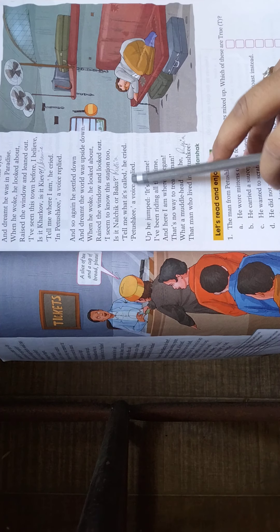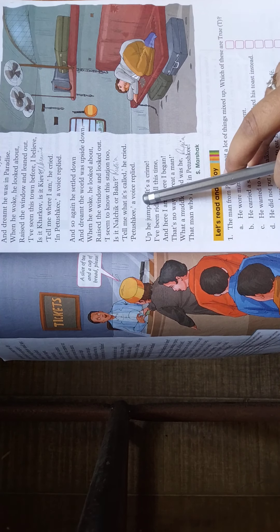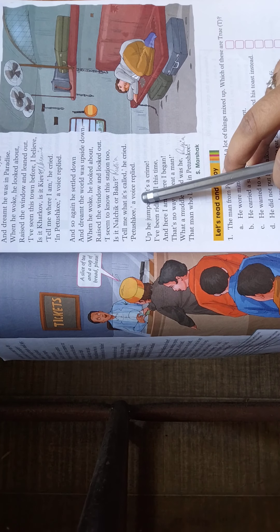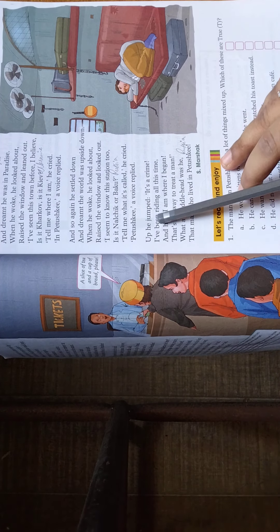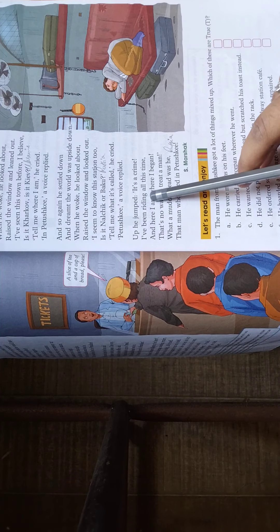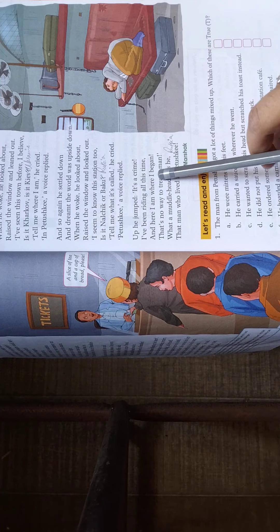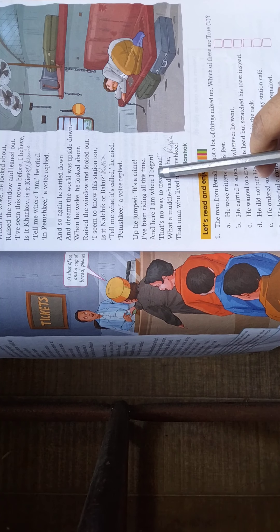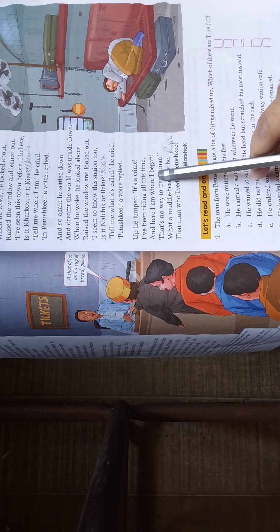Tell me what it is called, he cried. Itissko, a voice replied. तो वो बोलता है, सब मुझे बताओ कि यह क्या है, कहाँ, कहाँ जा रहा हूँ. It's a crime! I have been riding all this time and here I am where I began. वो बोलता है, मैं यहाँ पे, जहाँ था, वहाँ मैं वापस आ गया. मैं कब से गोल गोल घूम रहा हूँ.